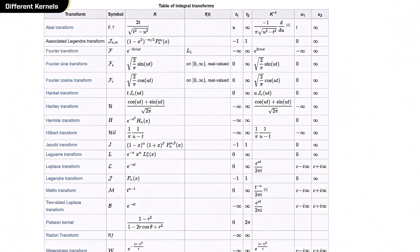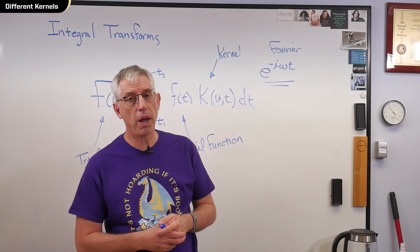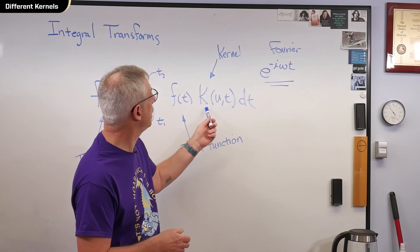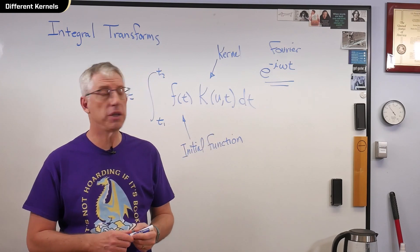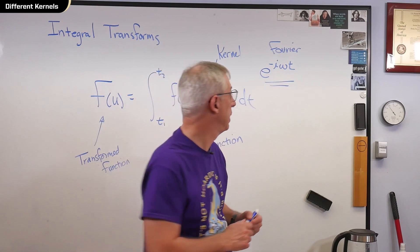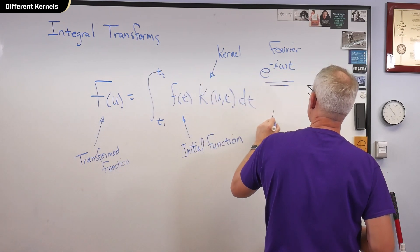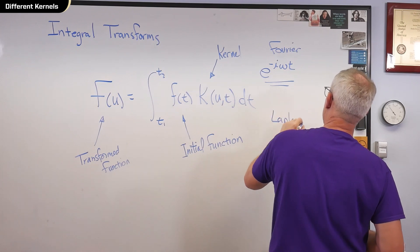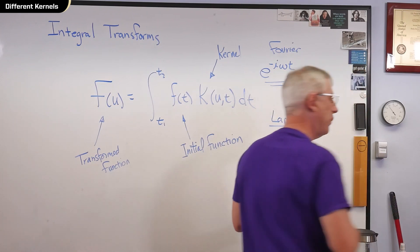Now, by far, by far, the ones you're going to see the most are the Fourier transform and the Laplace transform. And the only difference between them is the kernel functions are different. For the Laplace transform, it's e to the minus st. So I'll write that down here.